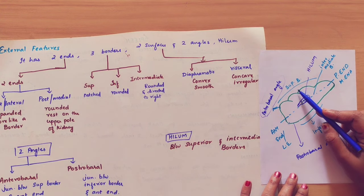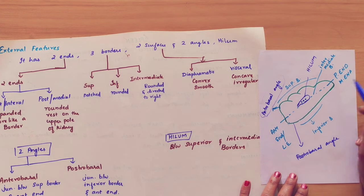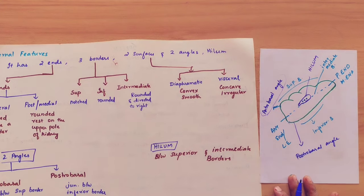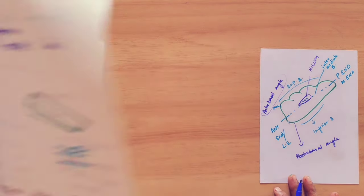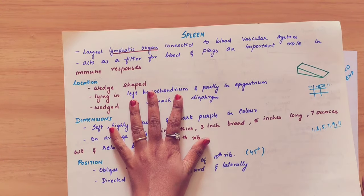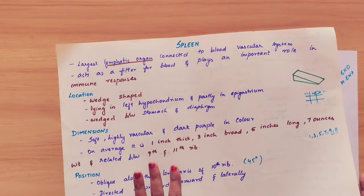This hilum is between the superior border and the intermediate border. This is all about the external features and the general introduction, location, dimension, and position of the spleen.